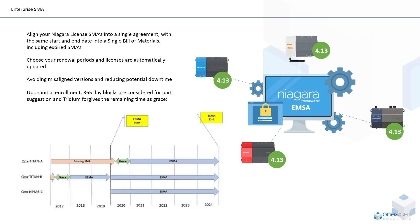This is where Enterprise SMA comes into play. This is an ideal version of what your site should really look like, where all of your licenses and agreements are tied into one. How the Enterprise SMA works is that you choose a renewal period and all licenses are automatically updated. You can choose the start date and the maintenance end date too. The Enterprise SMA will align all of your Niagara licenses into one agreement with the same start and end date, in a single bill of materials, including all the expired SMAs too.